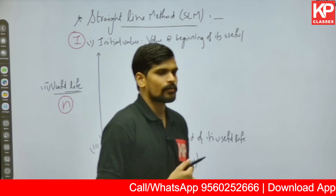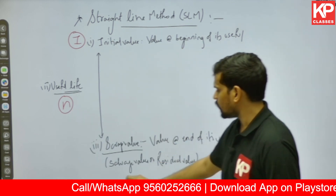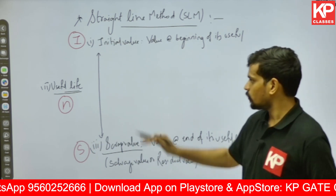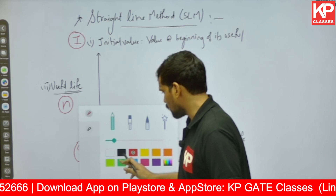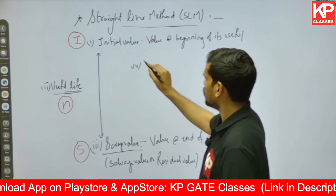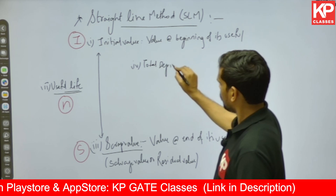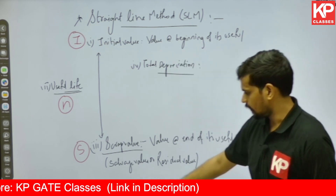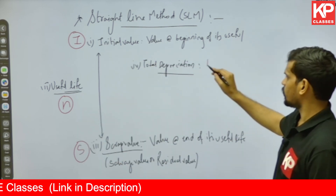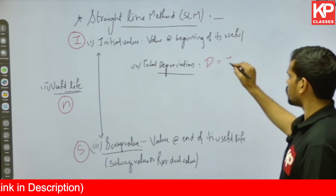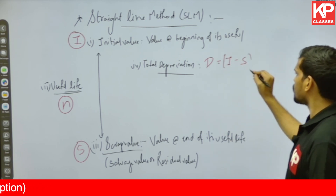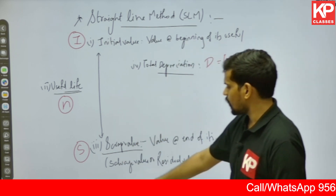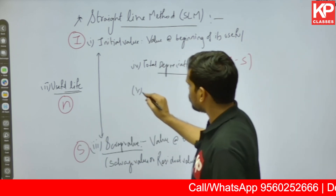Point number four is Total Depreciation. Total Depreciation is defined as the total fall in the value of an asset across its useful life — that is, the difference between the Initial Value and the Scrap Value. Let us denote Scrap Value by S. So Total Depreciation D equals Initial Value I minus Scrap Value S. That is the total fall in the value of an asset from beginning to the end of its useful life.